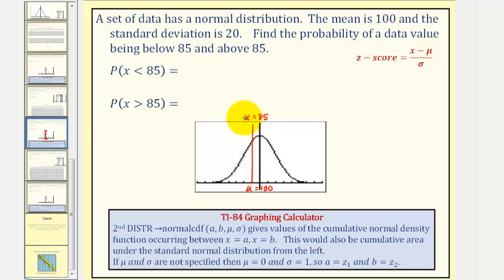Now, if we weren't going to use technology to find these probabilities, we would then find the corresponding z-score, then using the standard normal distribution, the area below the z-score would represent the probability that X is less than 85, and the area above the z-score would be the probability that X is greater than 85.